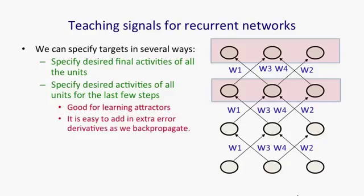And it's quite easy as we backpropagate to add in derivatives that we get from each time step. So the backpropagation starts at the top with the derivatives for the final time step. And then as we go back through the layer before the top, we add in the derivatives for that layer, and so on. So it's really very little extra effort to have derivatives at many different layers.